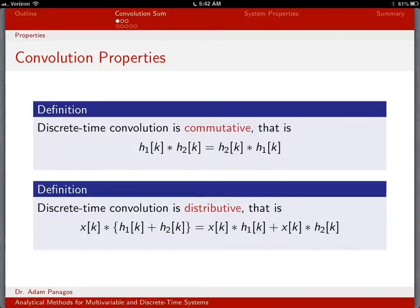Let's go ahead and take a look at the distributive property now. The distributive property says we can basically treat discrete time convolution like multiplication and distribute a convolution between parts. So instead of x of k convolved with a sum, we can write it as a sum of two different discrete time convolutions: x convolved with h1 plus x convolved with h2. Let's go ahead and show that this is true — the distributive property of discrete time convolution.